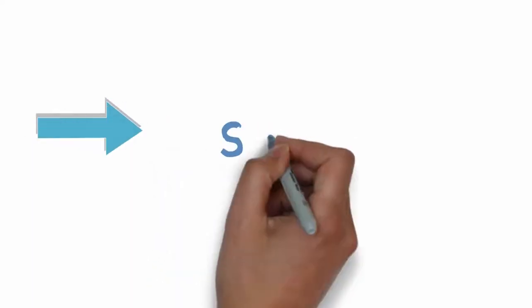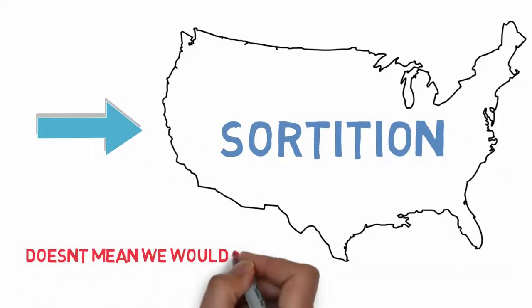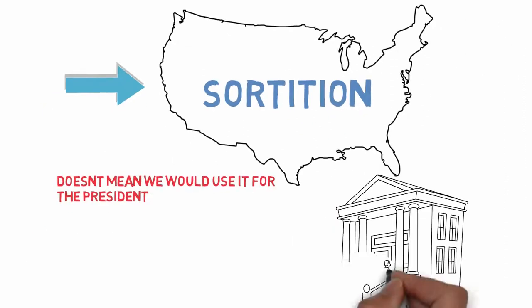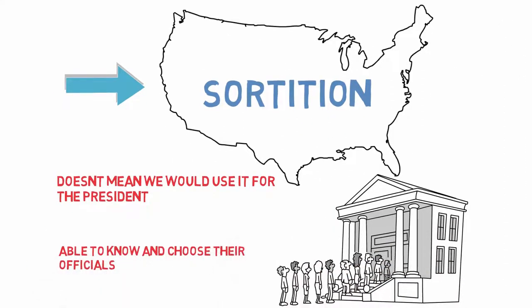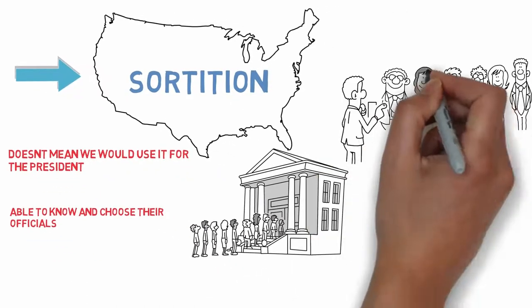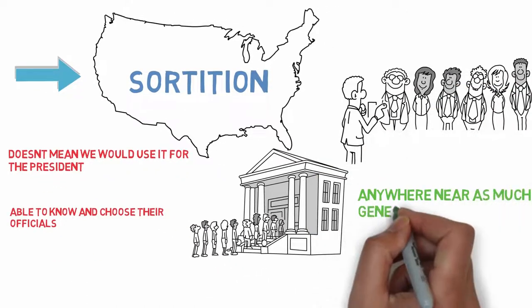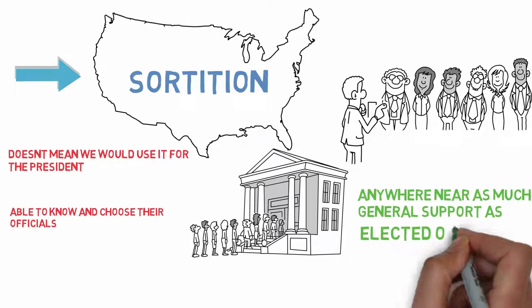Of course, if we implement a sortition in the U.S., it doesn't mean we would have to use it for the president, but the point is there's value in people being able to know and choose their officials, and it is unlikely that randomly chosen officials would have anywhere near as much general support as elected officials do.